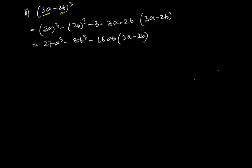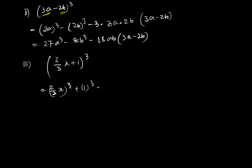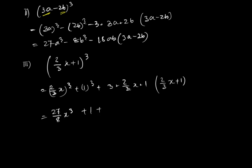The third question is (2/3·x + 1)³. Applying the (a + b)³ formula: (2/3·x)³ + 1³ + 3·(2/3·x)·1·(2/3·x + 1), which gives 8/27·x³ + 1 + 2x·(2/3·x + 1).